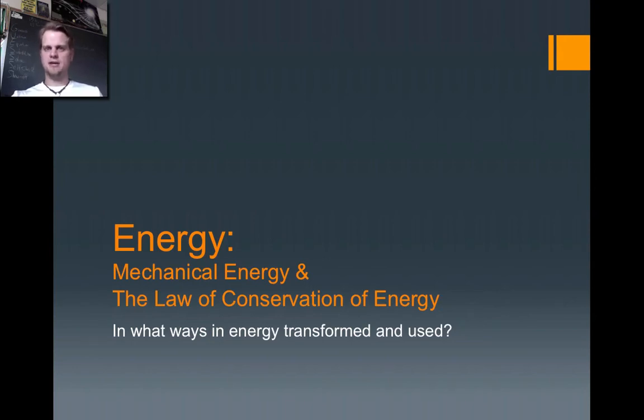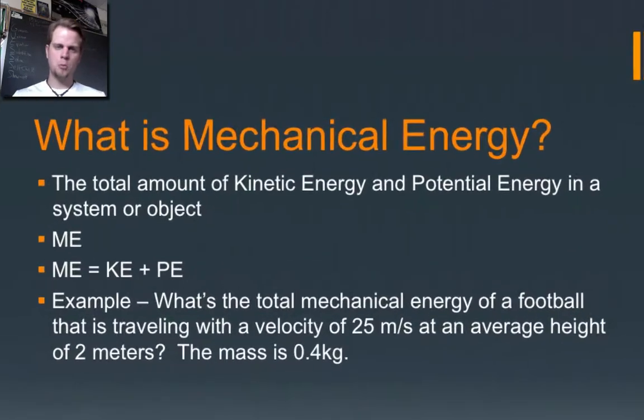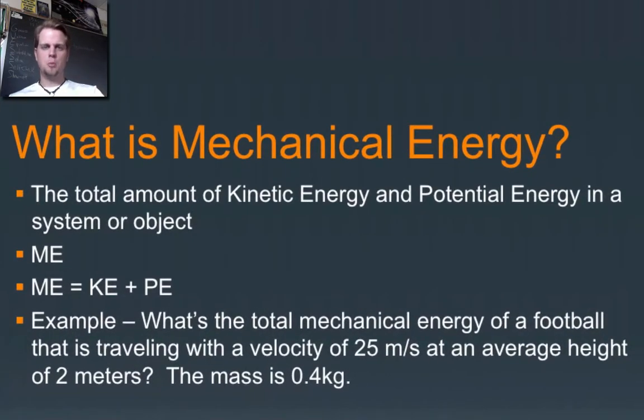So I want to summarize a little bit from last time and talk about what mechanical energy is, just to define it for you, and then move on to the law of conservation of energy. We're talking about in what ways is energy transformed and used. Mechanical energy is really just the addition of two things - it's the total amount of kinetic energy and potential energy in a system or object. What we abbreviate it as is ME equals KE plus PE.